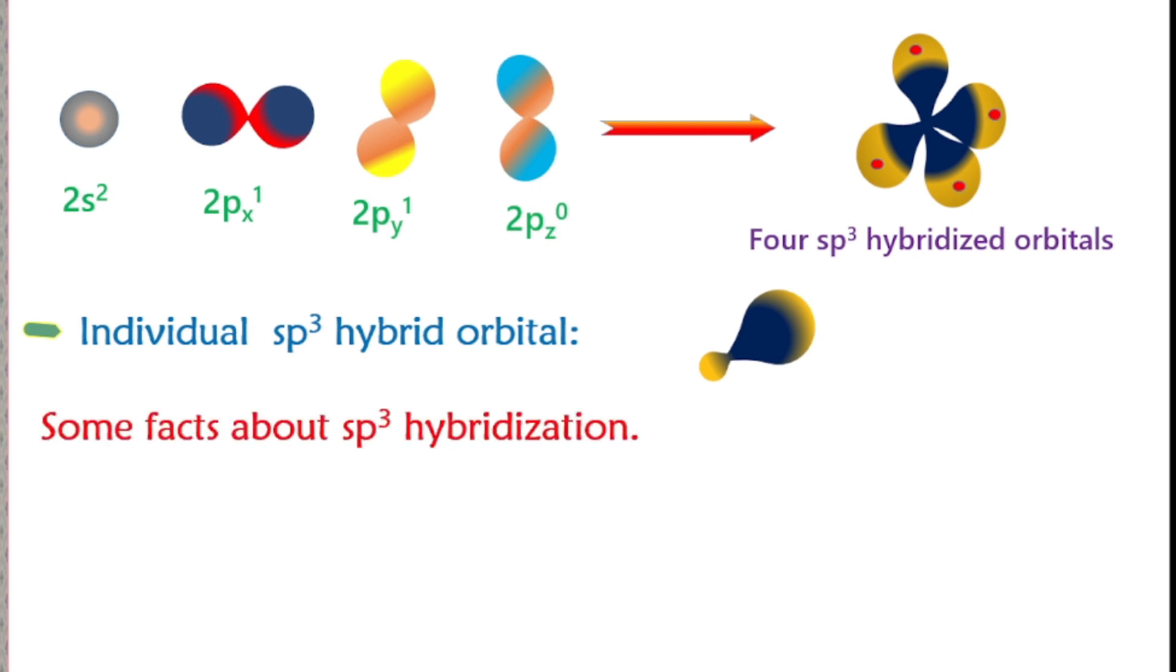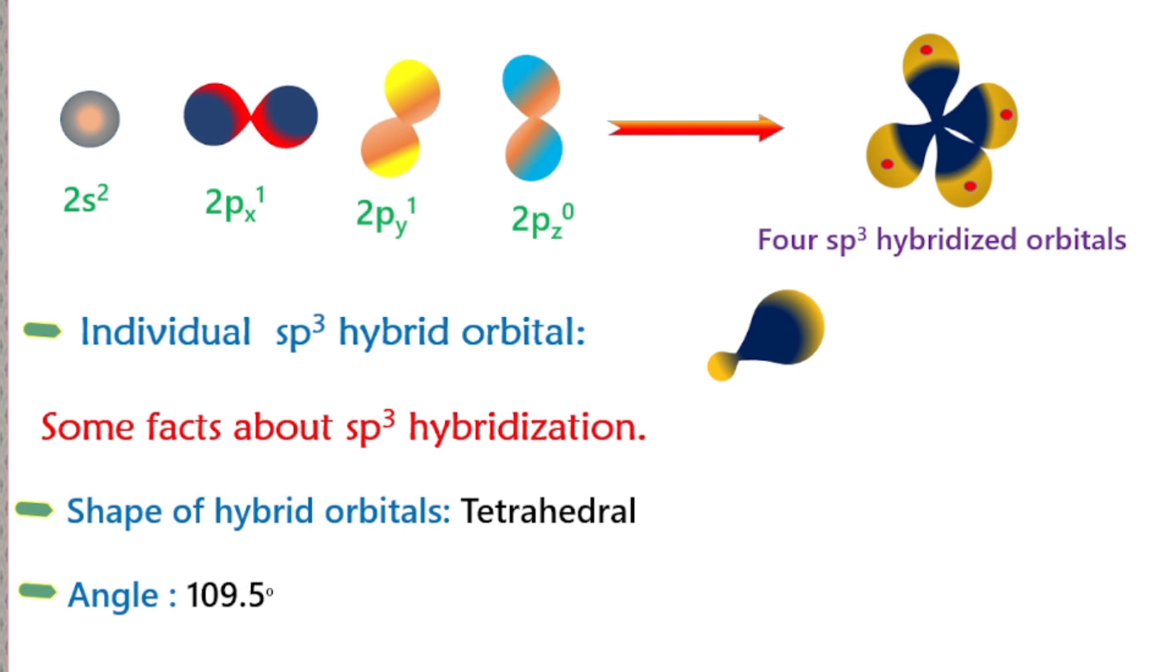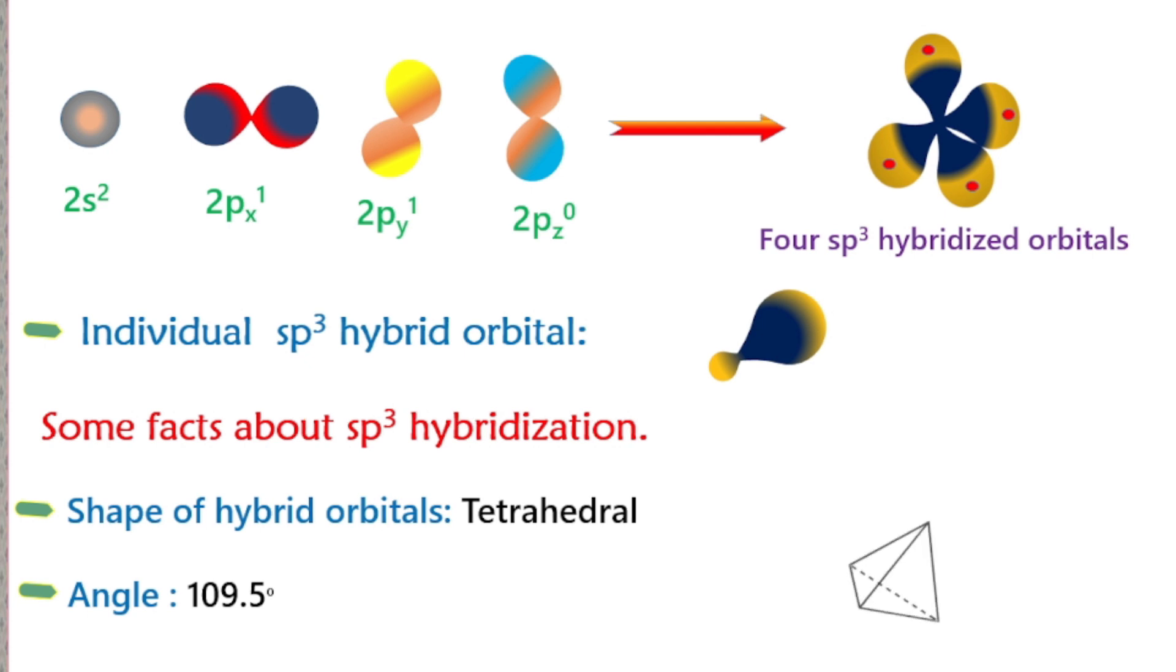Some facts about sp3 hybridization: the bond angle is 109.5 degrees. This is a tetrahedral shape which generates four orbitals.